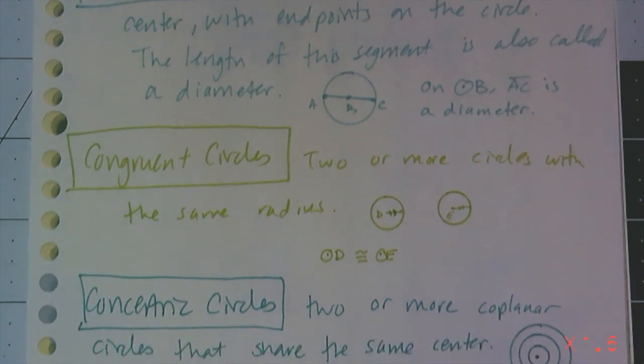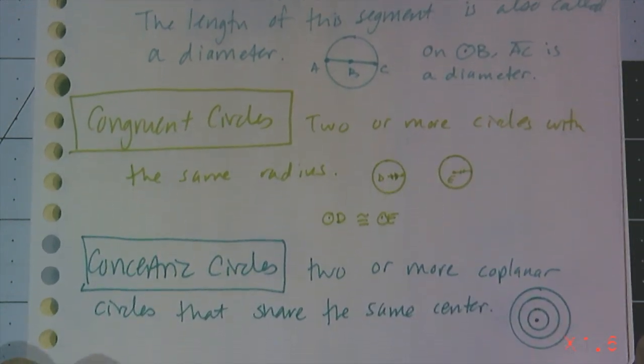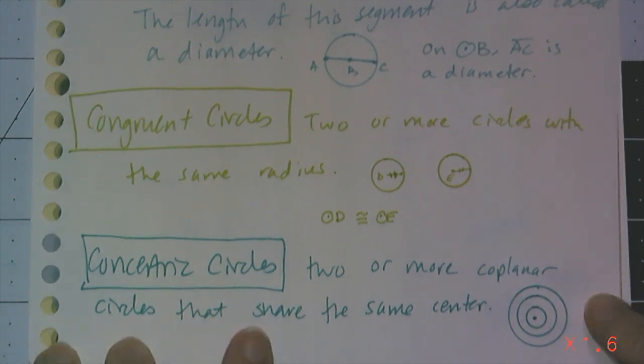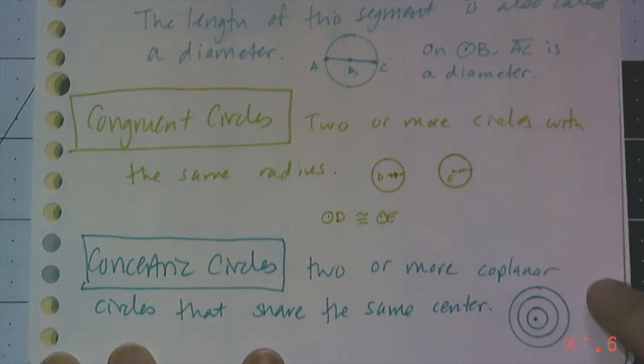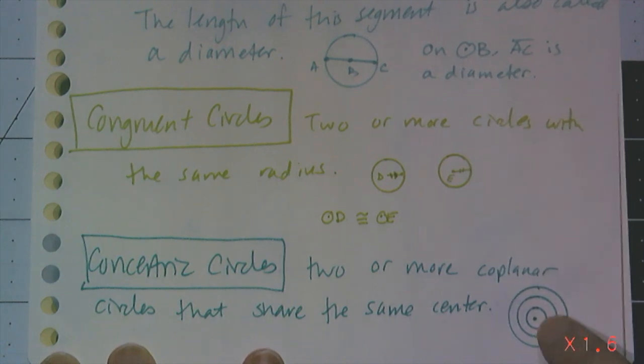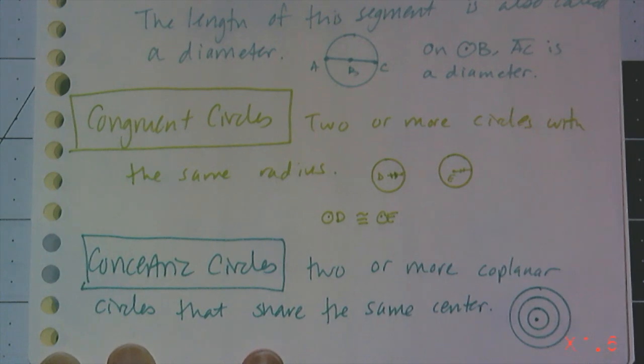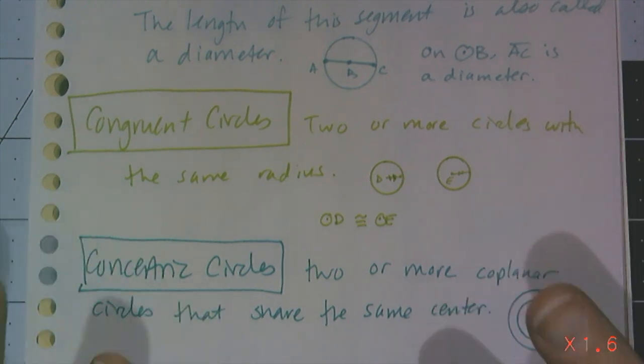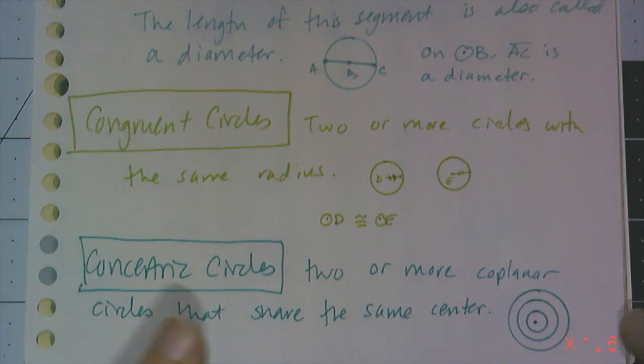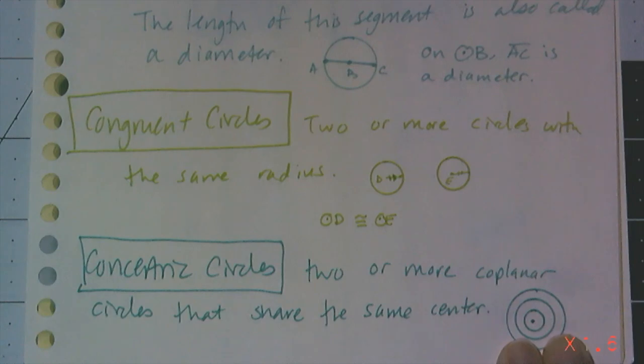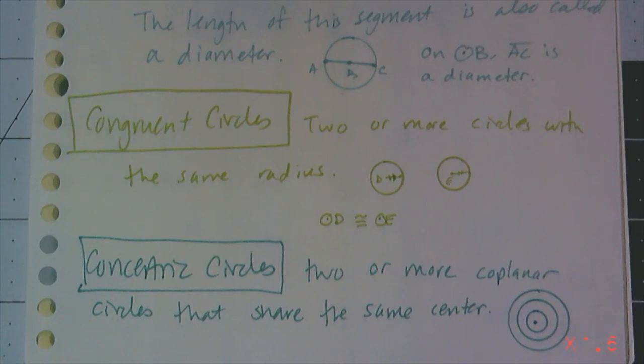And another type of circles are concentric circles. These are two or more coplanar circles that share the same center. So all three of these circles share the center, and therefore, they are concentric because they are drawn in the same plane. Notice it says coplanar. If I get rid of the word coplanar on some of these things, circles turn into spheres. And these circles here start to end up being in different planes, and so those would not be concentric circles if it's not coplanar.